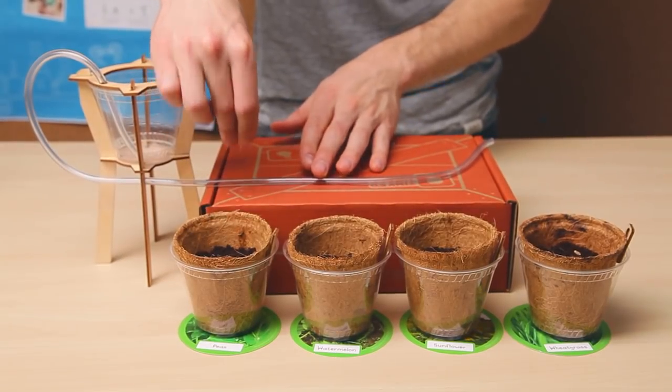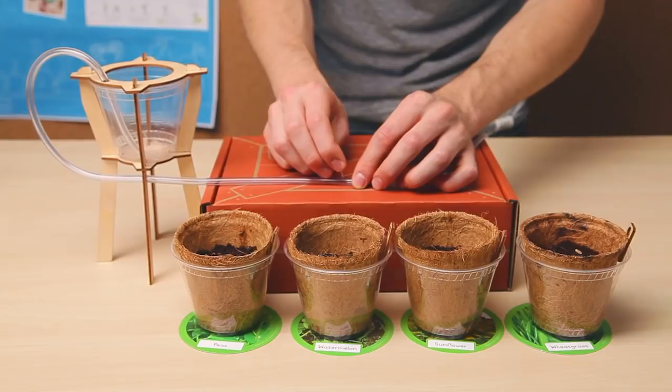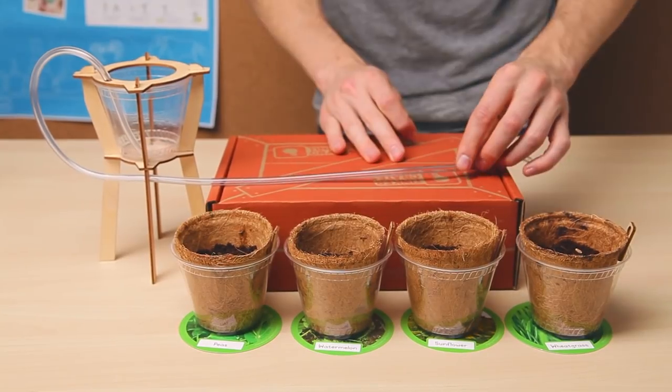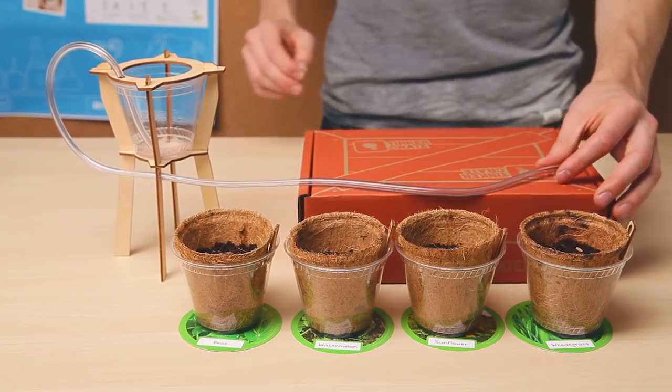Line up your planter pots in front of your tinker crate. Then poke holes in your tubing that line up with the center of each pot. Make sure to only poke a small hole. Don't poke your pushpin all the way through both sides of the tubing.